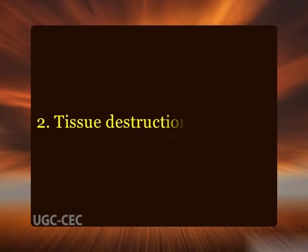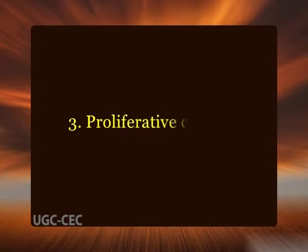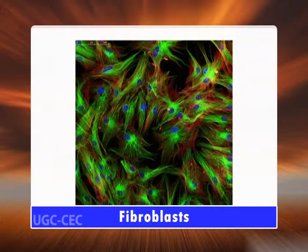Next is tissue destruction and necrosis: tissue destruction and necrosis are common in many chronic inflammatory lesions and are brought about by activated macrophages through the release of a variety of biologically active substances. Third is proliferative changes: as a result of necrosis, proliferation of small blood vessels and fibroblasts is stimulated, resulting in the formation of inflammatory granulation tissue.